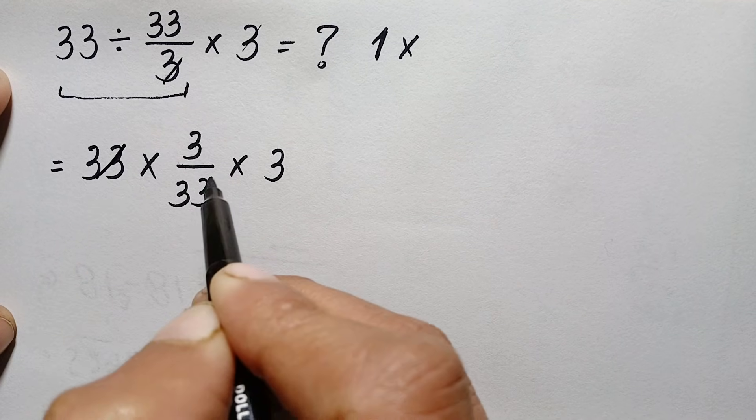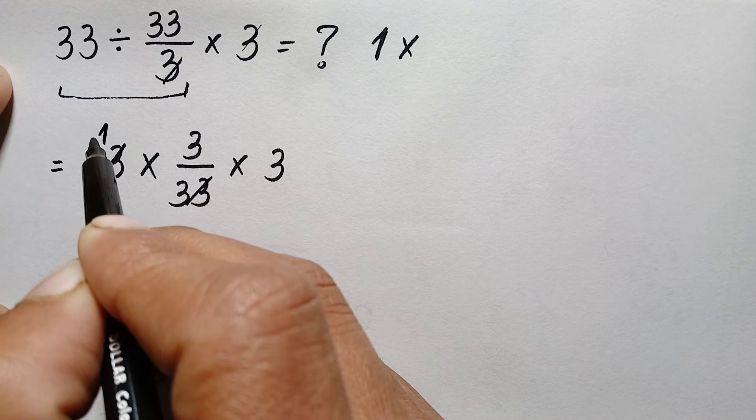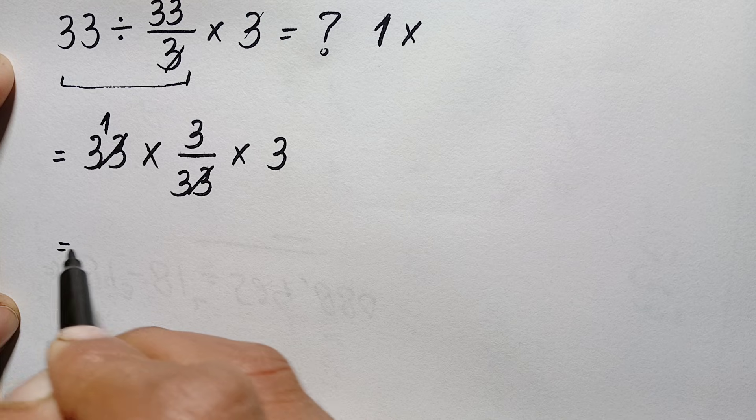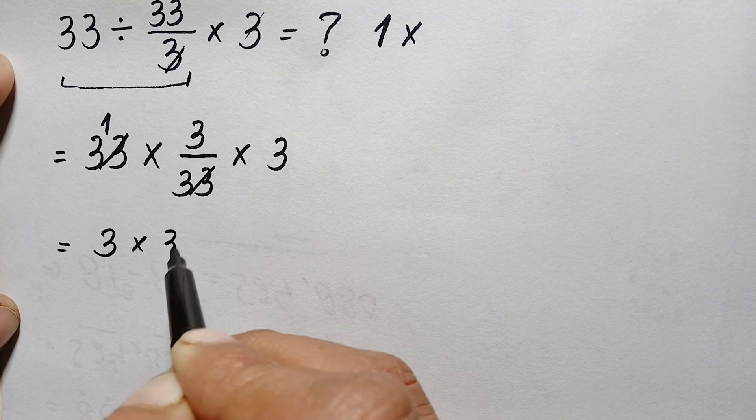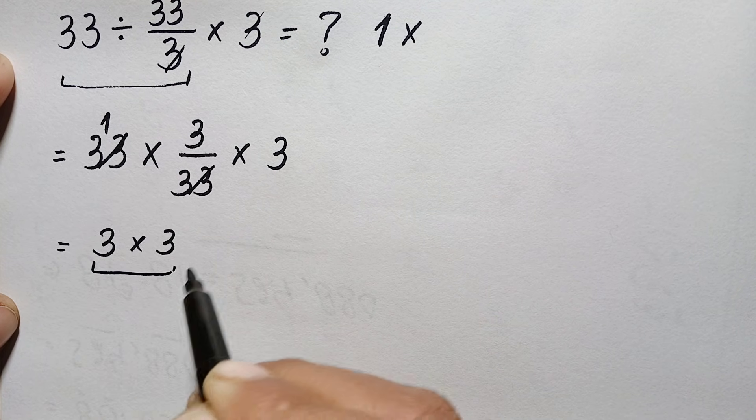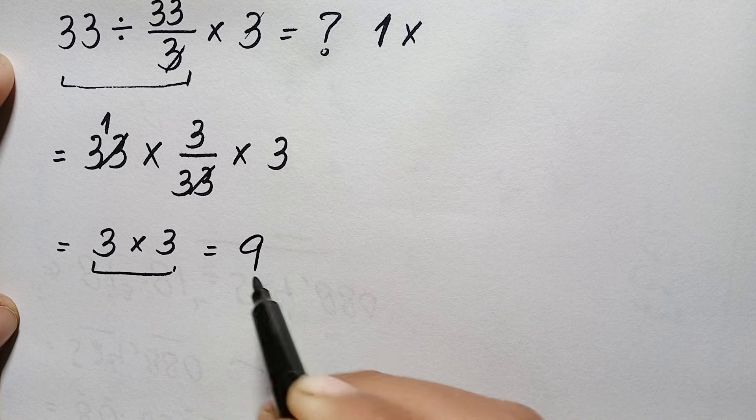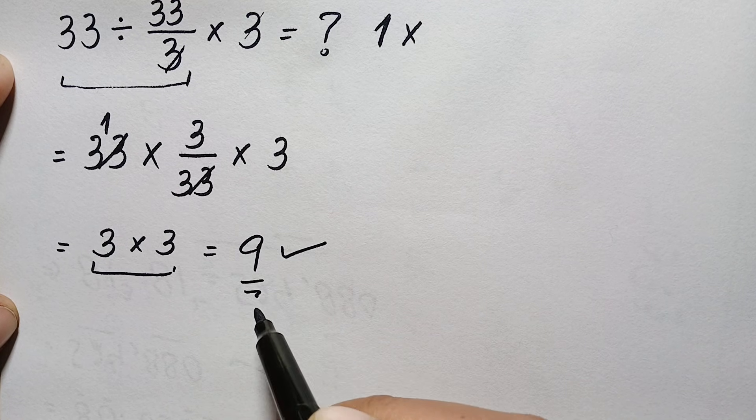Here we can cancel this 33 with this 33, so this will become only 1. Now 1 times 3 is simply 3 times 3, and finally 3 times 3 is simply 9, and that is our final correct answer.